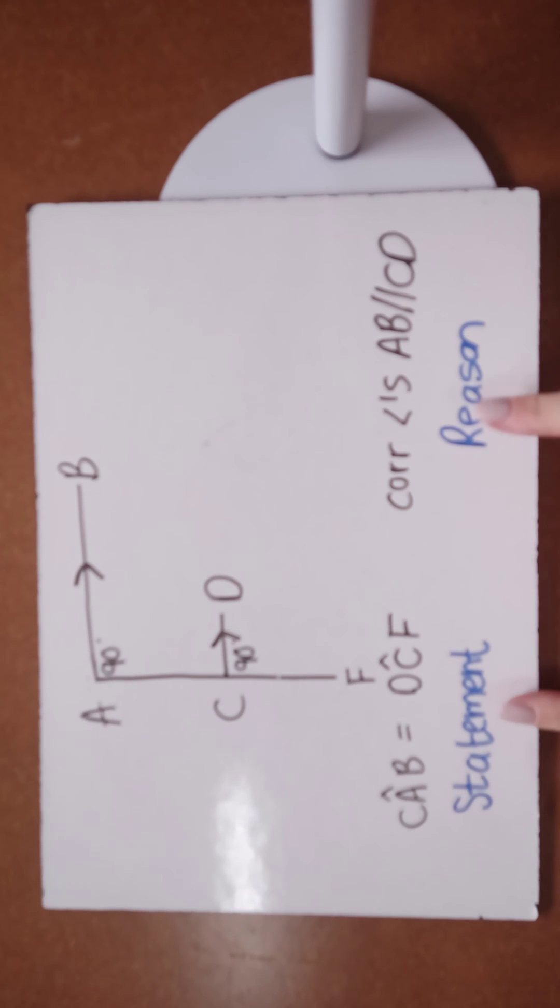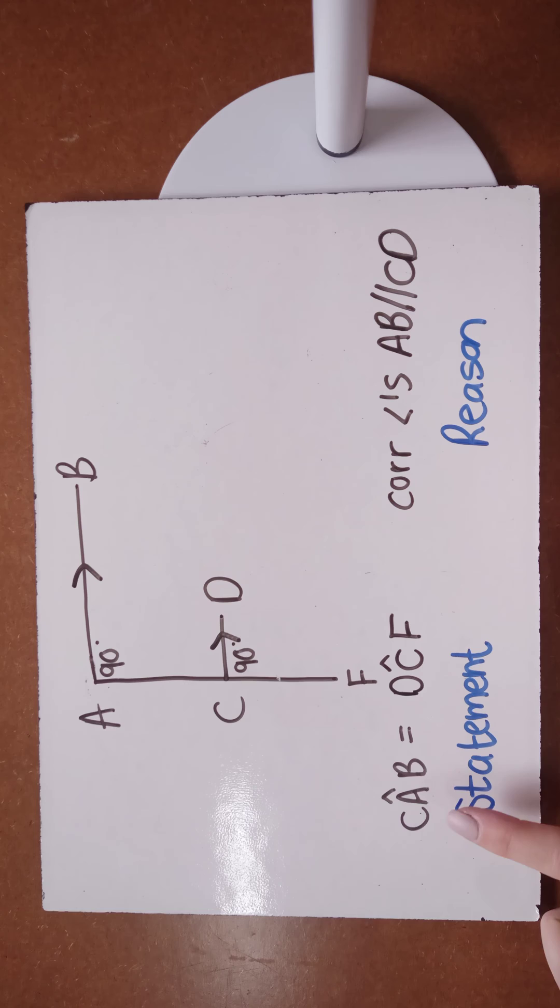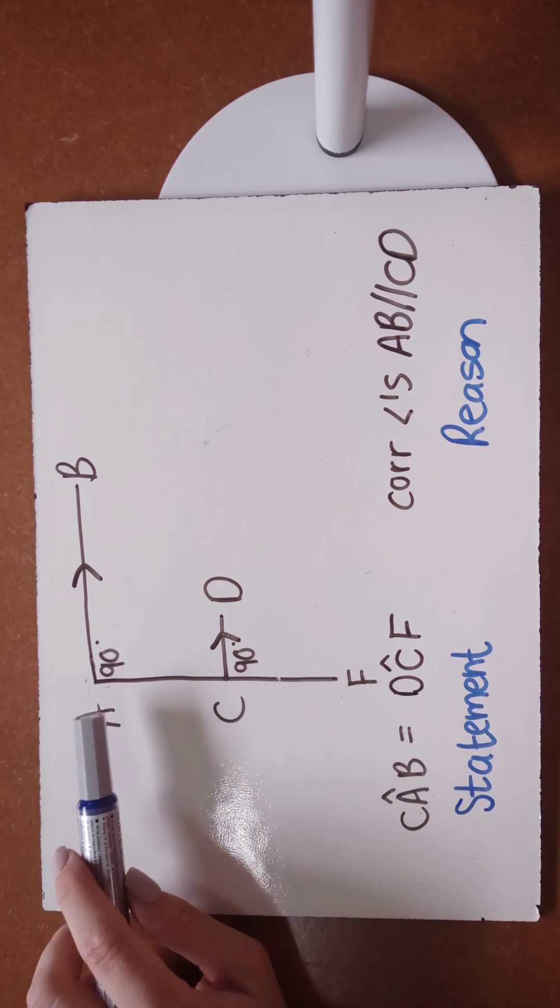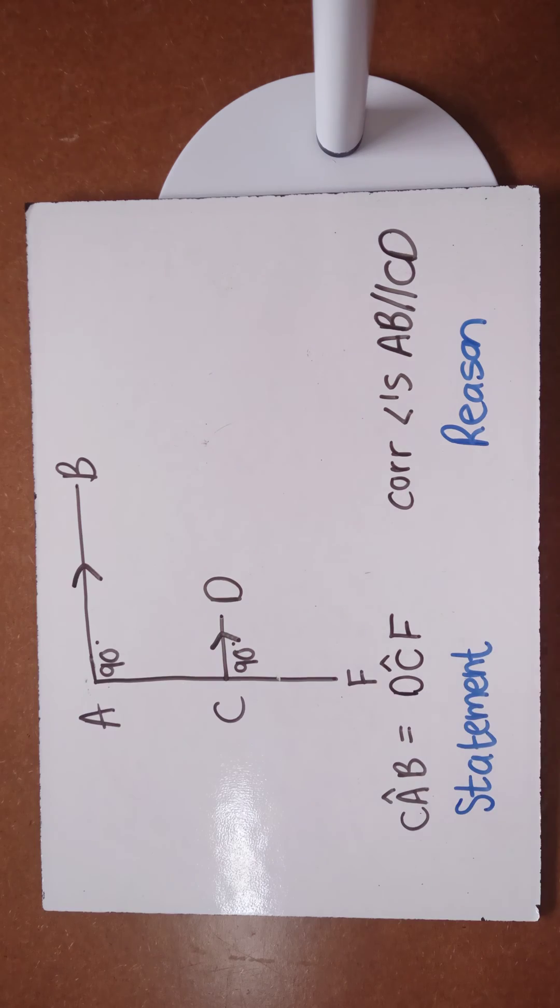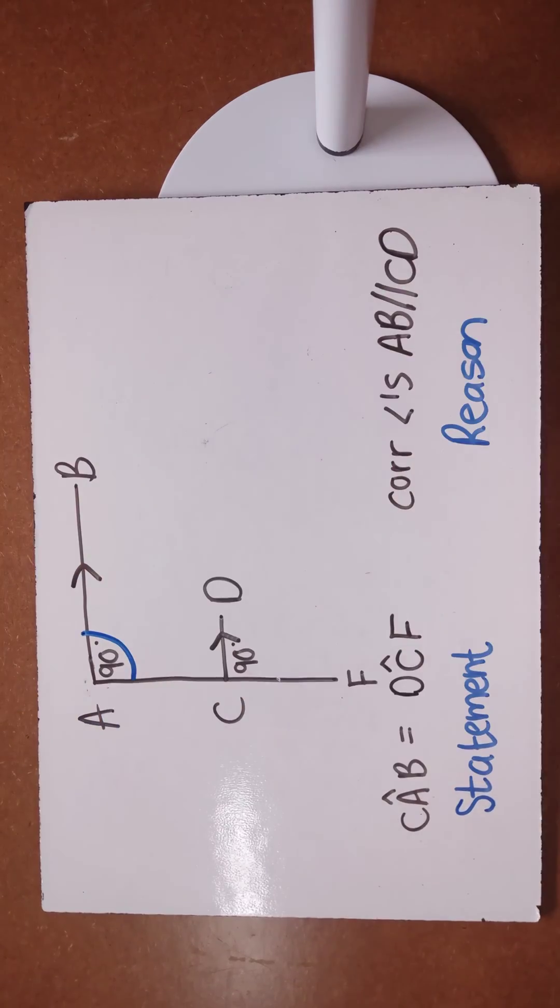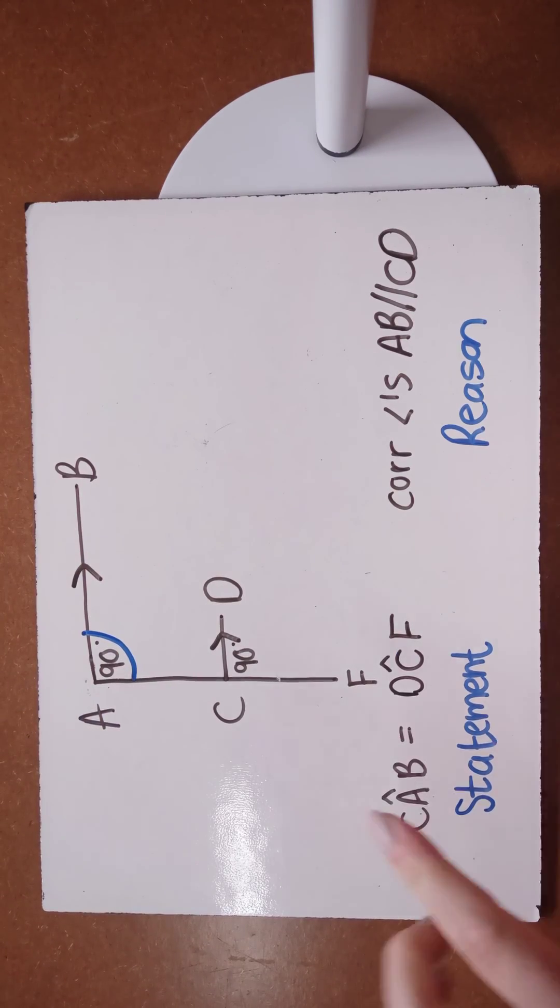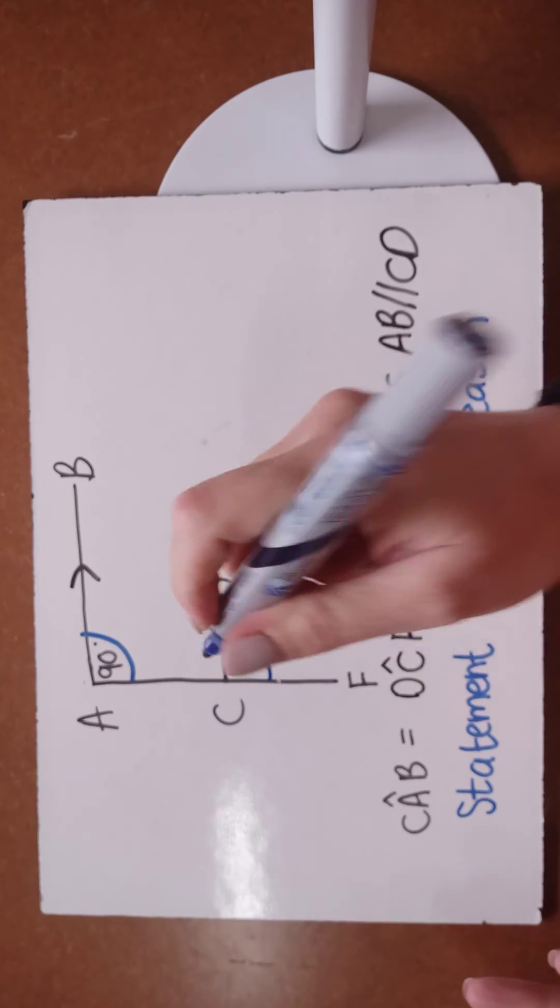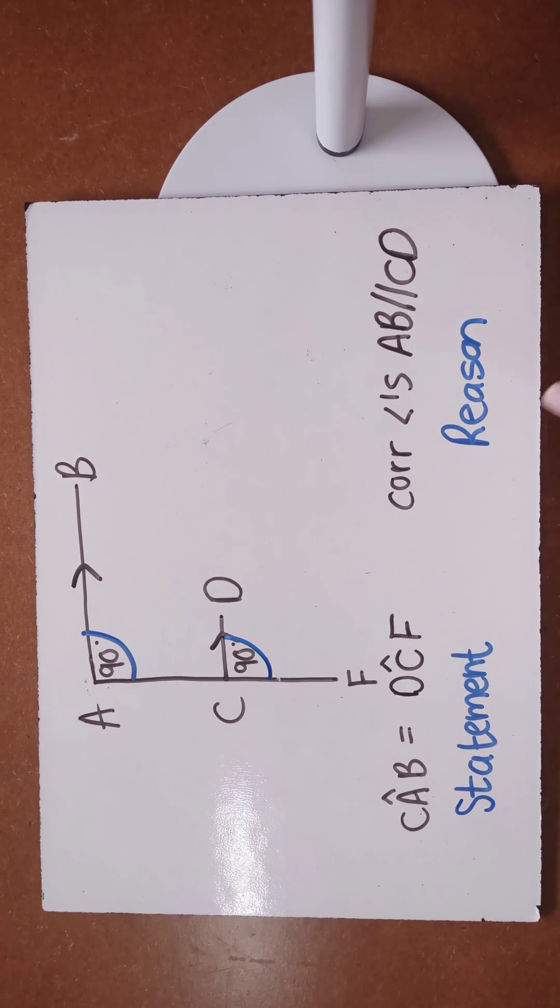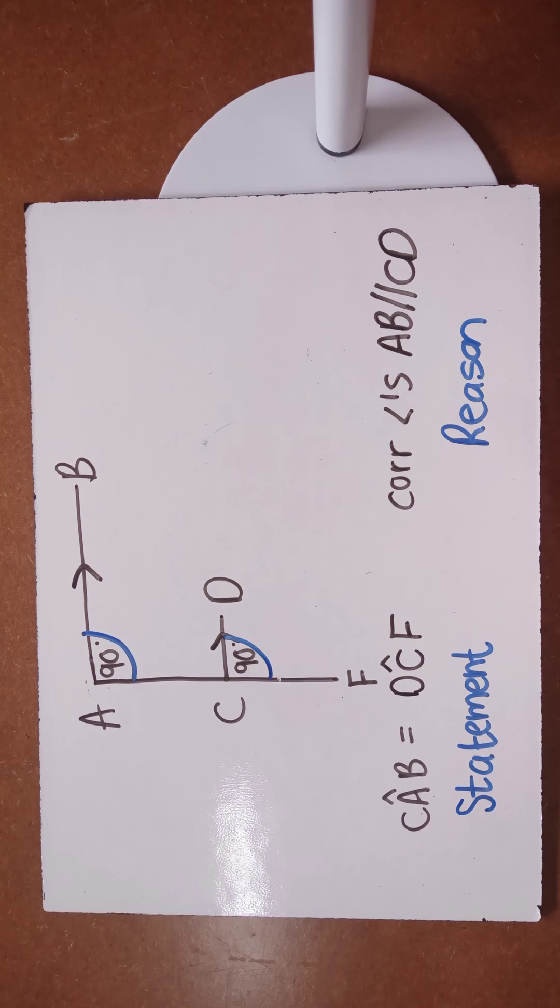If I had my statement and reason, I would say that angle CAB, remember angle CAB is CAB referring to that angle there, is the same as angle DCF referring to that angle over there. And my acceptable reason in your statement and reason columns is corresponding angles.